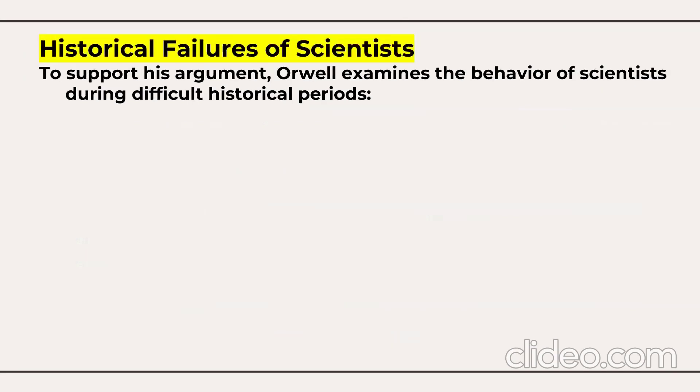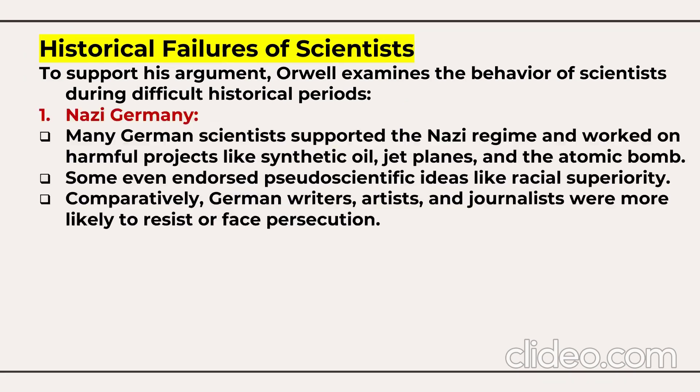George Orwell examines the behavior of scientists during difficult historical periods to support his argument. Regarding Nazi Germany: many German scientists supported the Nazi regime and worked on harmful projects like synthetic oil, jet planes, and the atomic bomb. Some even endorsed pseudo-scientific ideas like racial superiority. Comparatively, German writers, artists, and journalists were even more likely to resist or face persecution.